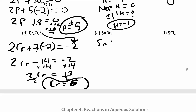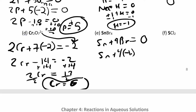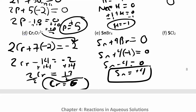For SnBr4: Sn + 4Br = 0. Bromine is a halogen — a non-metal — so it likes to be negative one. So Sn + 4(−1) = 0, giving Sn − 4 = 0, and Sn = +4. The metal is positive, which makes sense.